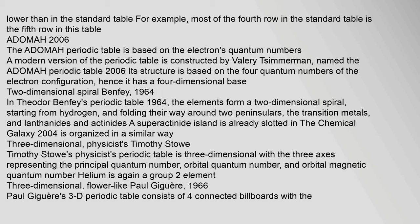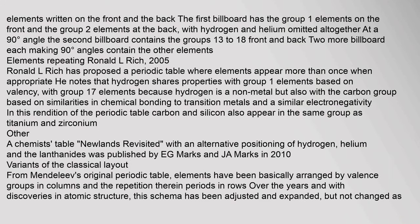Three-dimensional, flower-like: Paul Jaeger, 1966. Paul Jaeger's 3D periodic table consists of four connected billboards with the elements written on the front and the back. The first billboard has the group-one elements on the front and the group-two elements at the back, with hydrogen and helium omitted altogether at a 90-degree angle. The second billboard contains groups 13–18 front and back; two more billboards each making 90-degree angles contain the other elements.